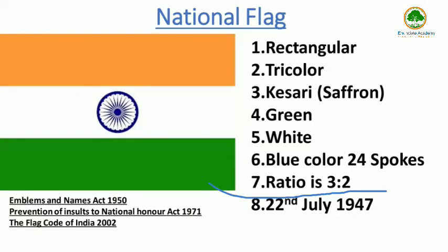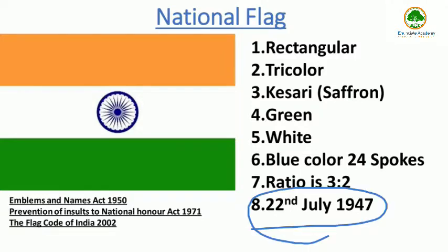It was adopted in its present form during a meeting of the Constituent Assembly held on 22 July 1947, and it became the official flag of the Dominion of India on 15 August 1947. It is based on the Swaraj flag, a flag of the Indian National Congress designed by Pingali Venkaiah and first flown in 1923.